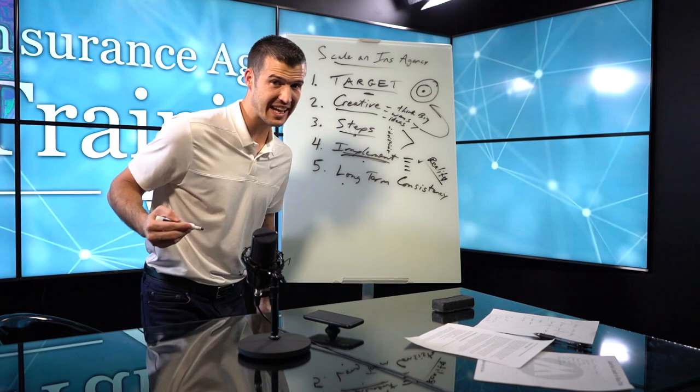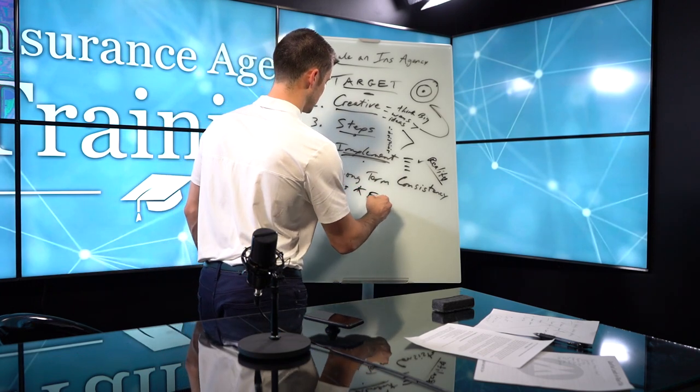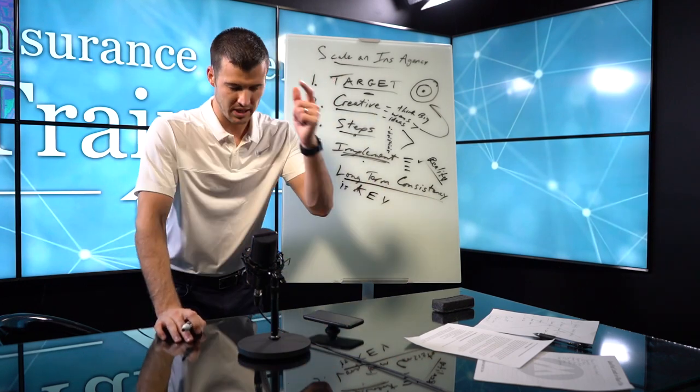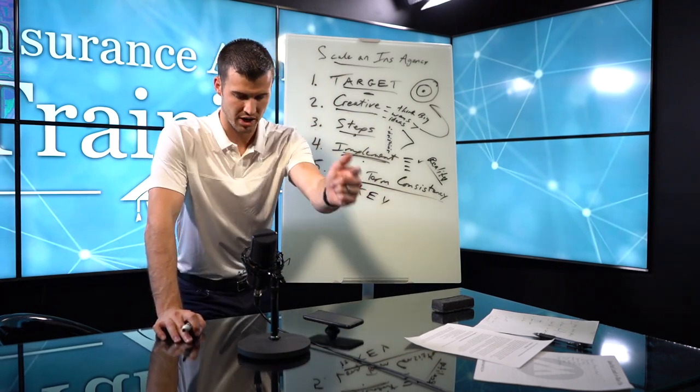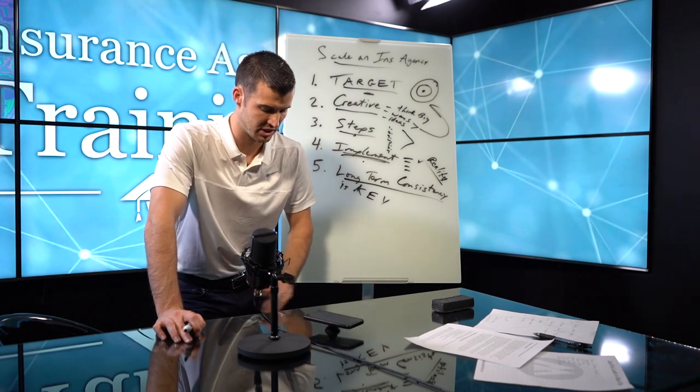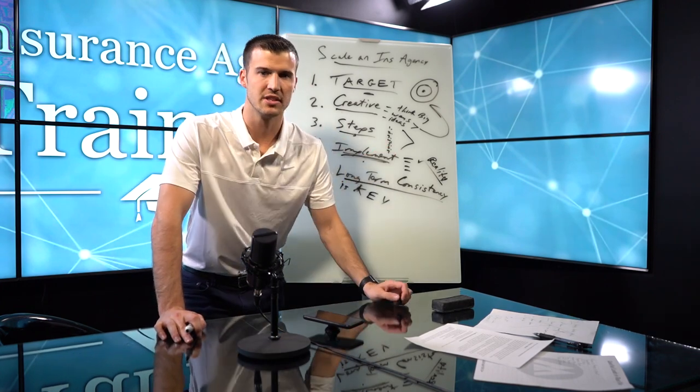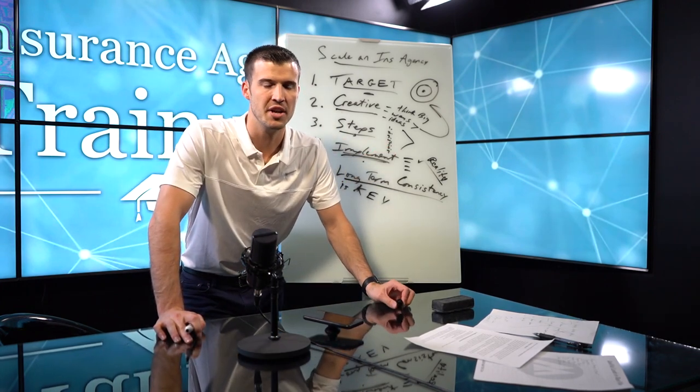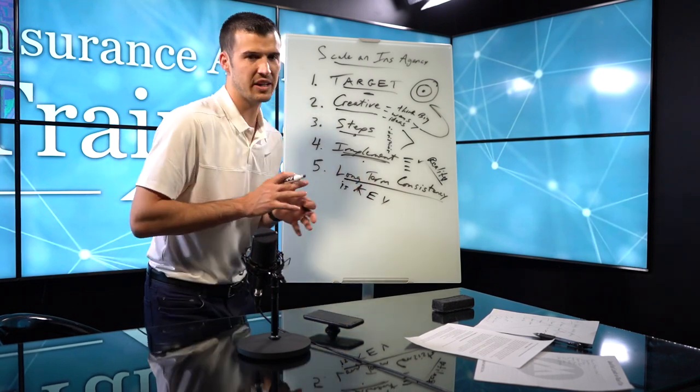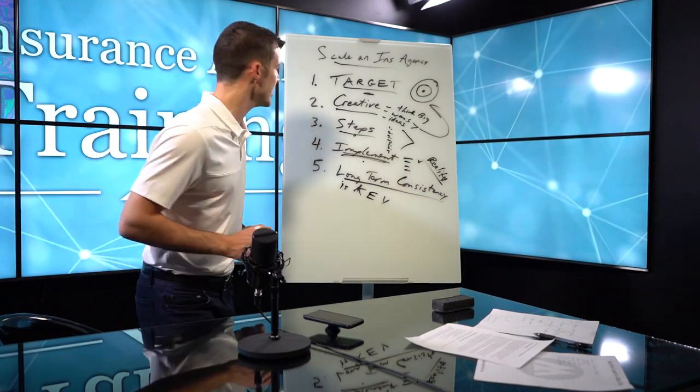And the big ticket that makes people scale is long-term consistency. Obedience in the same direction for a long period of time. As Coach Burt would say, he's speaking at 8% Nation this year. Consistency is key. Obedience. Long-term obedience in the same direction. And you'll continue to grow and scale. It'll make you think bigger.